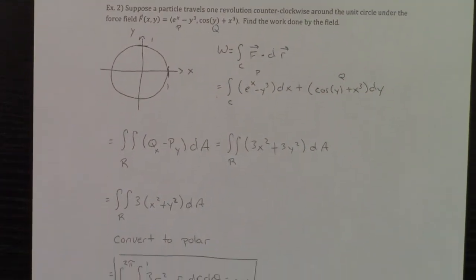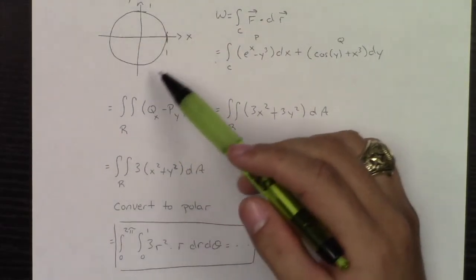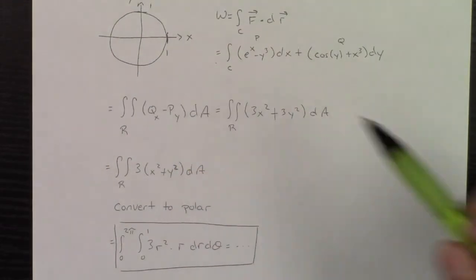Converting this into polar, this too, is about as easy as it gets, right? Your r is constant between 0 and 1, and it's the full 0 to 2 pi.